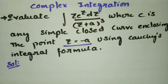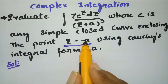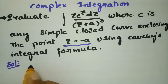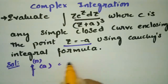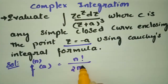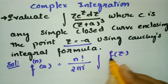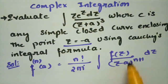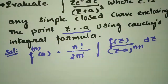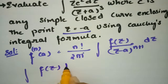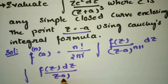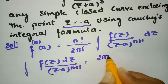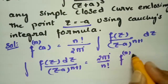The singular point is given as z = -a. According to Cauchy's integral formula, the nth derivative of f at a equals n! / (2πi) times the integral of f(z) / (z - a)^(n+1) dz. So rearranging, the integral of f(z) / (z - a)^(n+1) dz equals 2πi / n! times f^(n)(a).